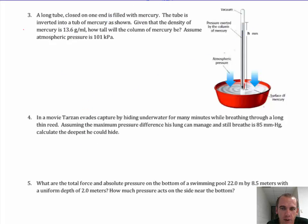So a long tube closed on one end is filled with mercury, the tube is inverted into a second tub of mercury as shown. Given the density of mercury is 13.6 grams per milliliter, that's also grams per cubic centimeter or 13,600 kilograms per cubic meter, how tall would the column of mercury be? Assume atmospheric pressure is 101 kilopascals.